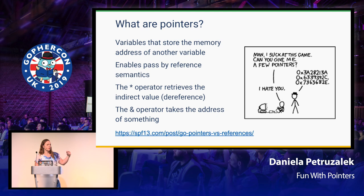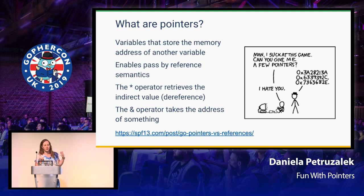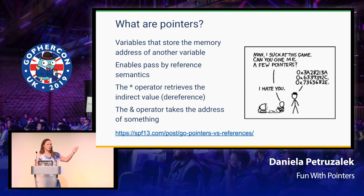A pointer points to something, and you can change what it points to during its lifecycle. We have two nice operators. The star operator — dereferencing — accesses the value the pointer points to. The ampersand operator takes the address of something, effectively creating a pointer to that thing.